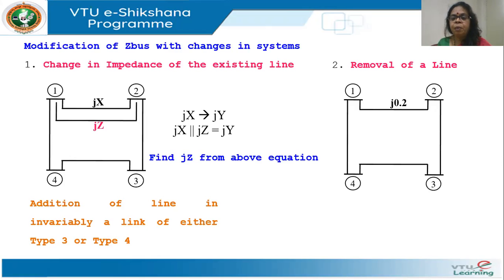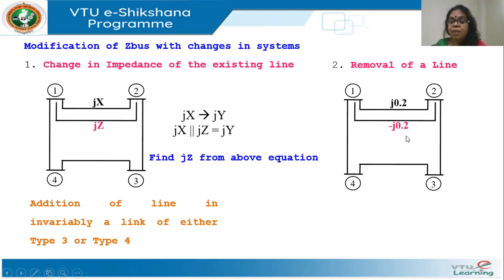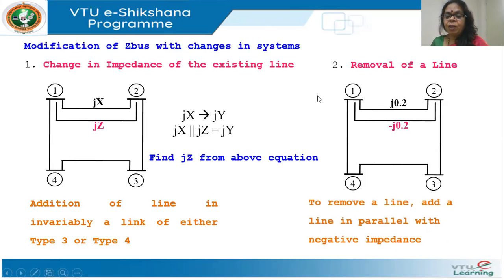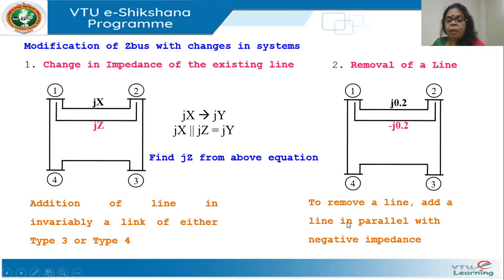If a line is removed — say a line of impedance j0.2 — I simply add another line in parallel with negative impedance minus j0.2, so the net admittance becomes zero and that line's effect is cancelled. So to remove a line: add a line in parallel with negative impedance, because the net admittance will become zero, modelling the removal of the line.